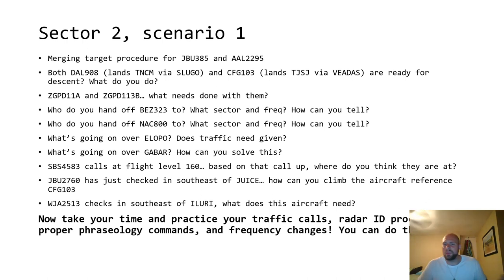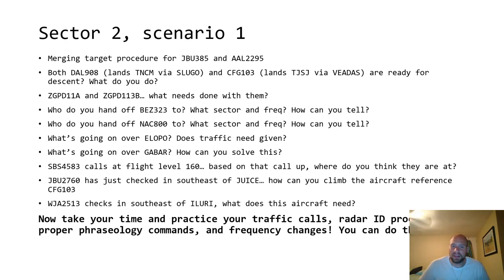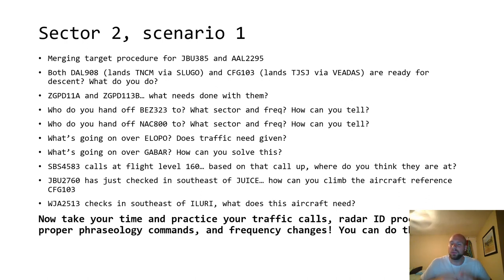What's going on over Gabar? You see Seaborn 4600 who already has a restriction to cross Gabar at six, and Rouge 1330 is maintaining five. You know they're going to want higher, so we're going to try to solve that in an efficient manner. Seaborn 4583 calls at flight level 160 — based on that, where do you think they are? There's an aircraft over MODX, what we call a Mode C intruder. They're squawking a discrete beacon code at an IFR altitude right for direction of flight, but yet not radar identified. We don't have a full data block — there's been no auto acquisition of the data tag. So it's a good chance that it's probably them.